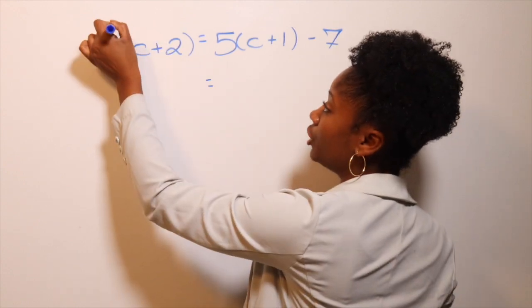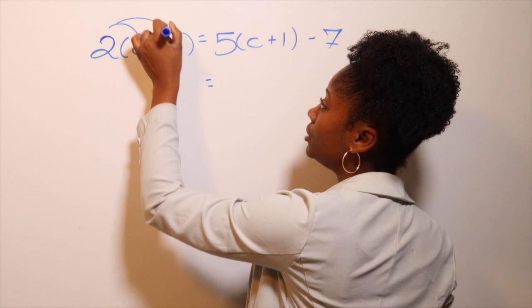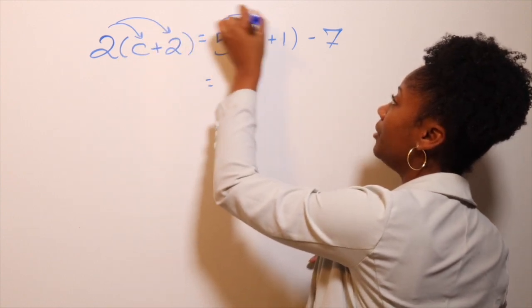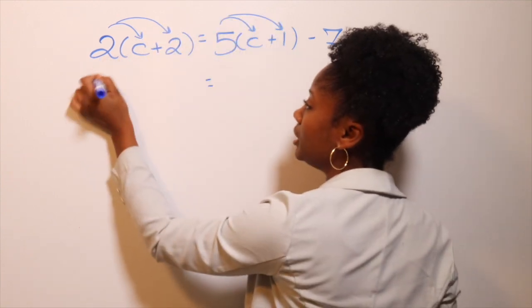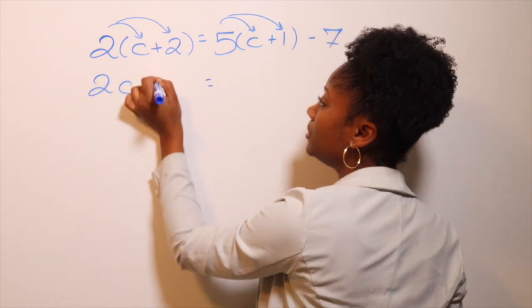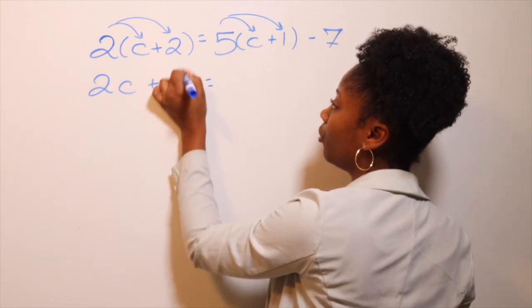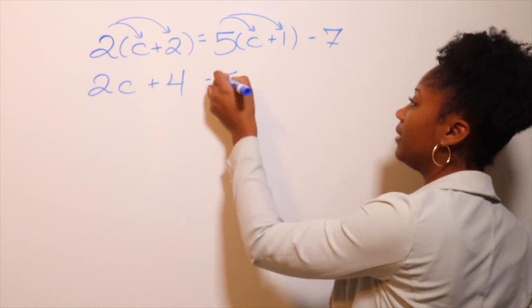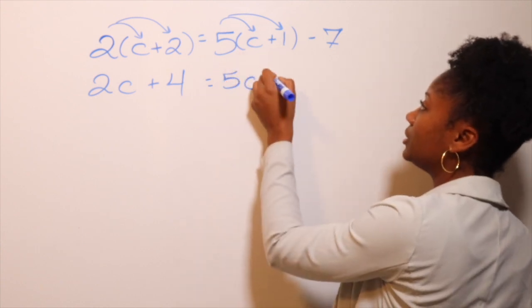So what we do here, we're going to do 2 times C, then 2 times 2. We're going to do 5 times C, and then 5 times 1. So 2 times C is 2C. 2 times 2 is 4. 5 times C is 5C. 5 times 1 is 5.